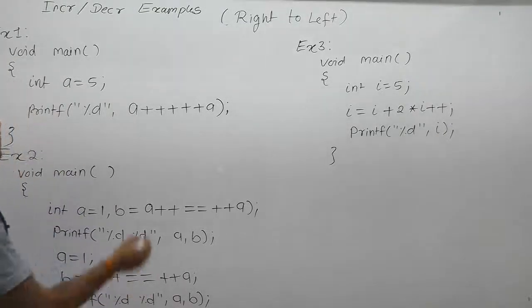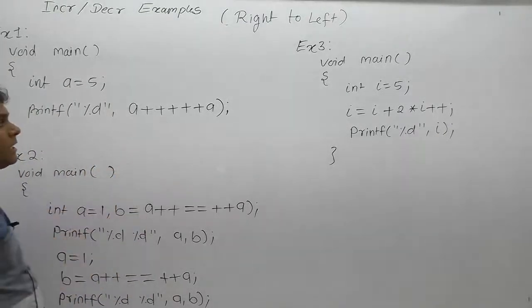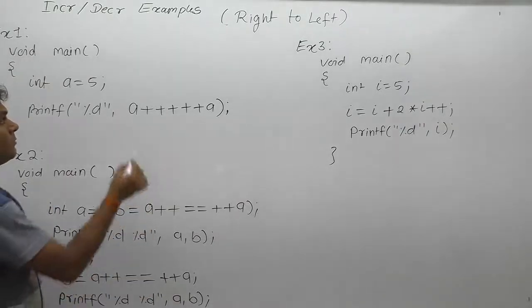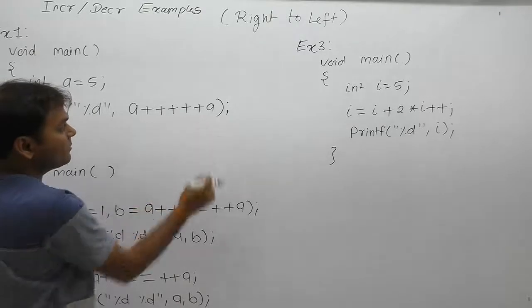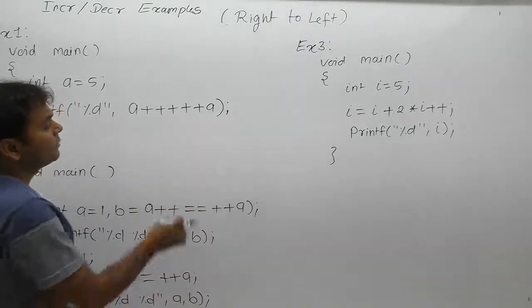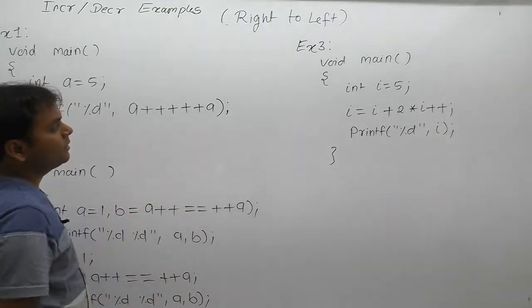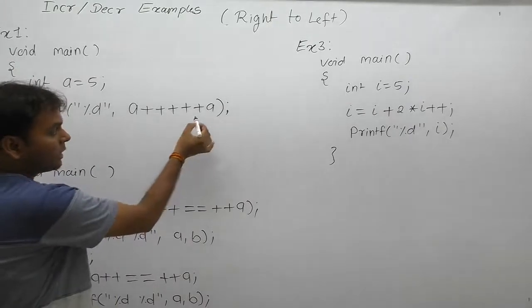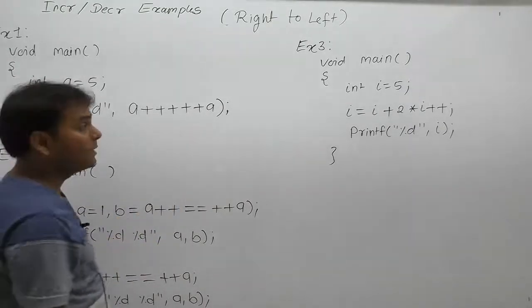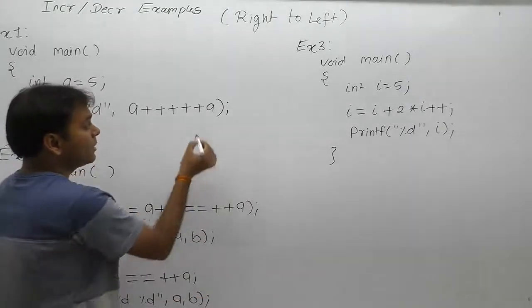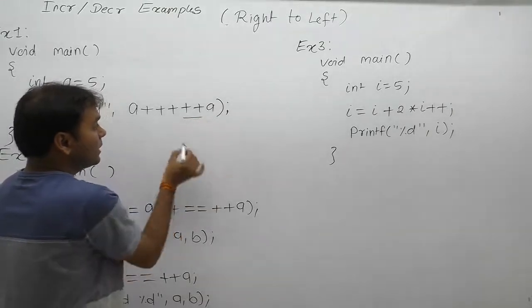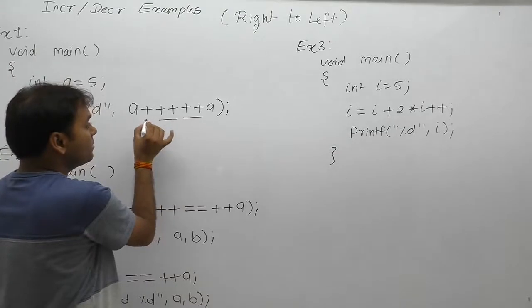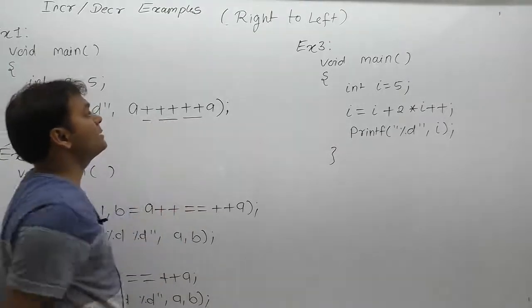Let's look at another example of increment and decrement operations. In this one, there are five times continuously plus operator. In that case, all are considered as unary from right to left. Right to left combinations are created. In that case, combinations are formed according to plus plus considered as pre-increment, then another plus plus, this one is binary plus, this one is binary plus.